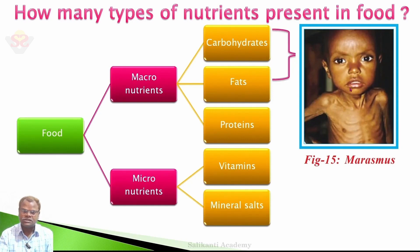Marasmus is caused by continuous births in females and lack of milk for these children. This causes marasmus.